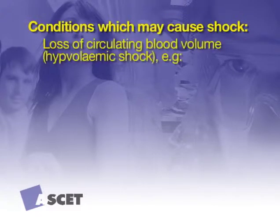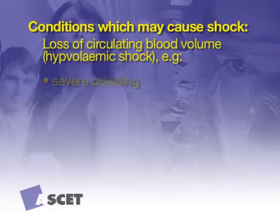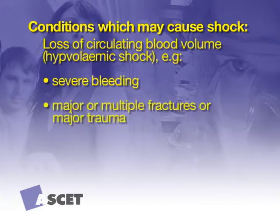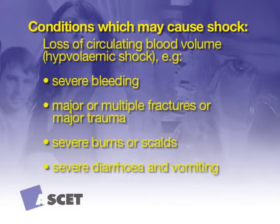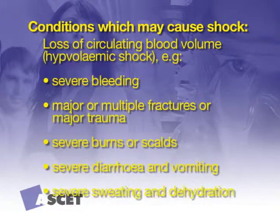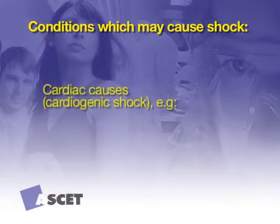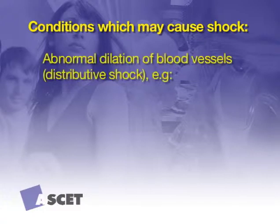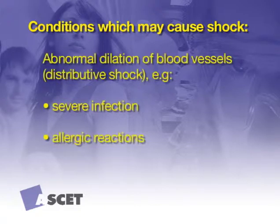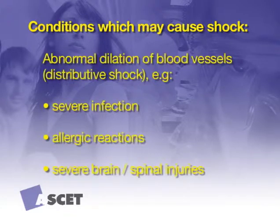Some conditions which may cause shock are: loss of circulating blood volume — hypovolemic shock — that is severe bleeding, major or multiple fractures or major trauma, severe burns or scalds, severe diarrhoea and vomiting, severe sweating and dehydration. Cardiac causes — cardiogenic shock — that is a heart attack. Abnormal dilation of blood vessels — distributive shock — that is severe infection, allergic reactions, or severe brain or spinal injuries.